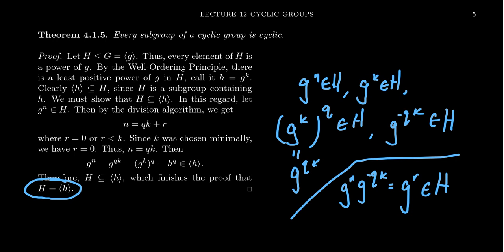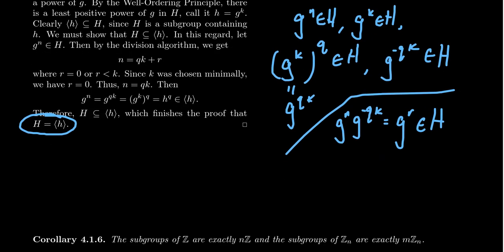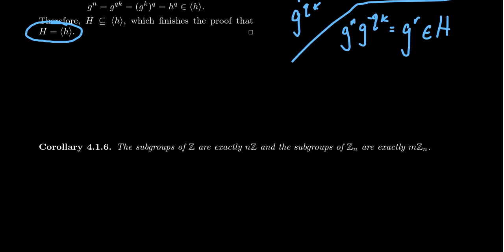The subgroup, this arbitrary subgroup of G, was itself a cyclic subgroup. Now let's come back to our known cyclic groups. We know that the integers under addition is an infinite cyclic group. And we've explored that nZ are cyclic subgroups of Z. But since Z is itself a cyclic group, the previous theorem then implies that every subgroup of Z must also be cyclic. And so therefore, these are the only subgroups of Z. The only subgroups of Z are going to be nZ.